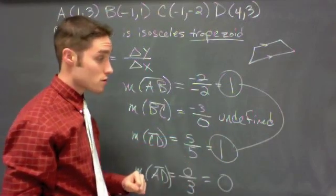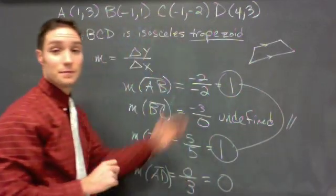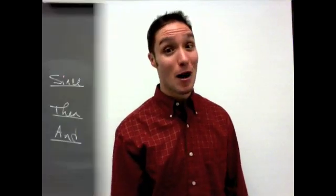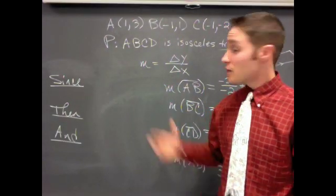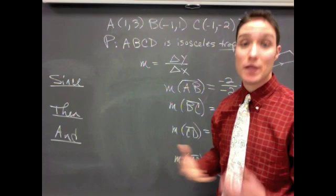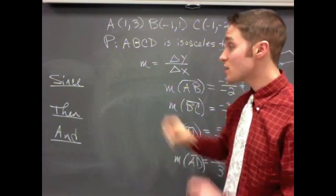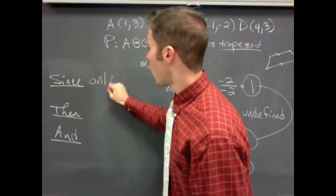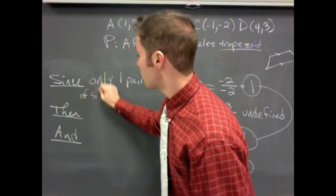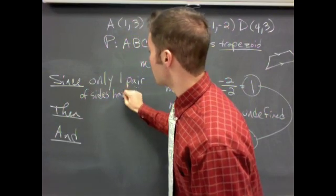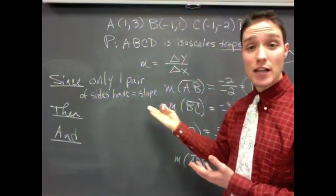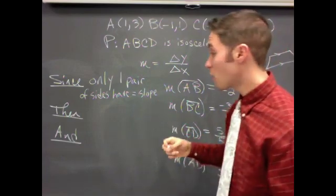Absolutely not. They do not have equal slopes. So this pair is parallel, the other pair is not. We're ready to draw a conclusion. Let's draw a conclusion. So I set up since, then, and. And the since part says what formula I used. I used the slope formula. So I'm going to say since only one pair of sides have equal slope. What does it mean to have equal slope? That means parallel.